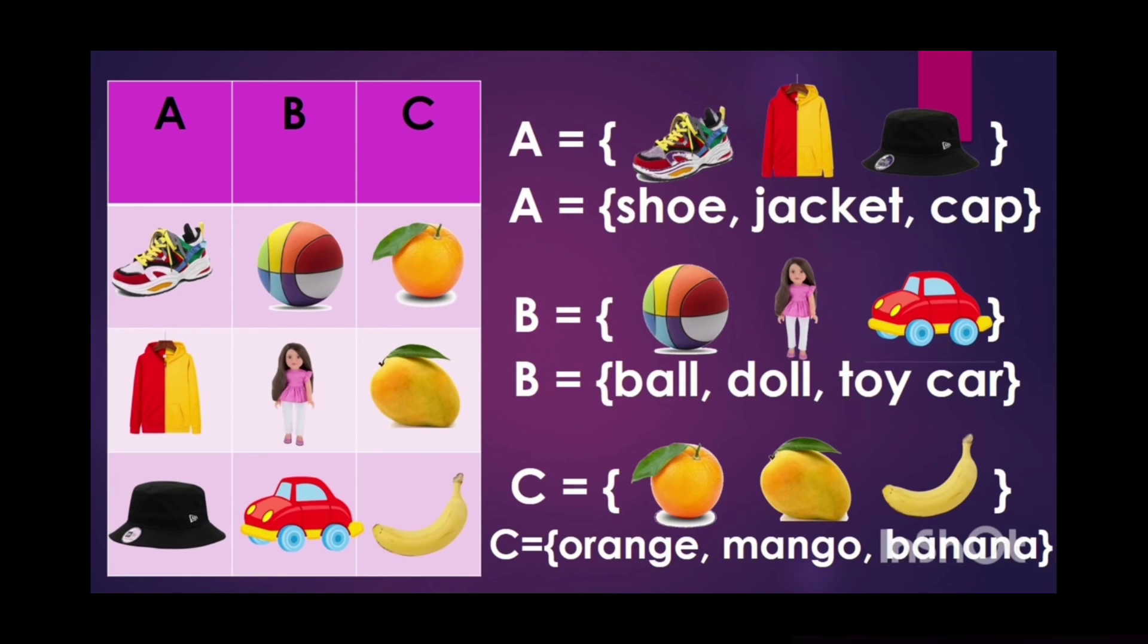In set B, we have ball, doll, and toy car. What set do you think they are? In set C, we have orange, mango, and banana. What set do you think they are?